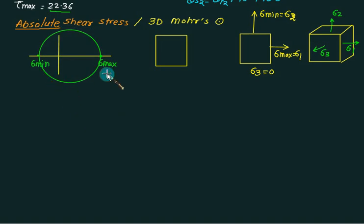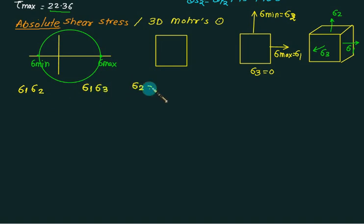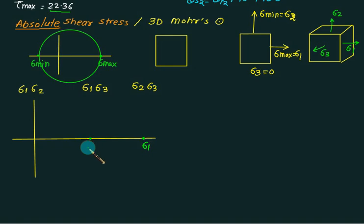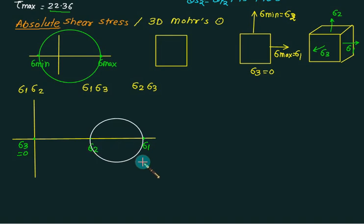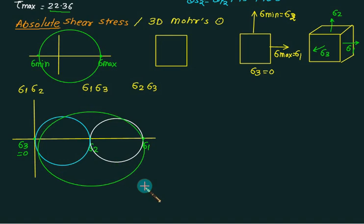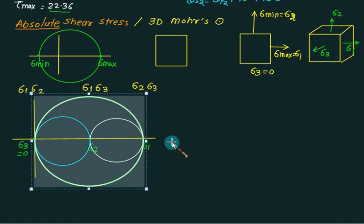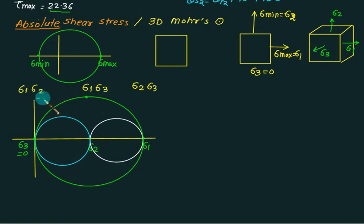Since we have three principal stresses, we can draw three different Mohr circles using three different combinations. The circle with the maximum diameter represents the absolute shear stress. First, draw the circle using sigma one and sigma two, then sigma one and sigma three, and finally sigma two and sigma three. Assuming sigma one and sigma two are both positive and sigma one is greater than sigma two, sigma three equals zero at the origin. The green circle connecting sigma one and sigma three has the maximum possible diameter, and its radius represents tau max absolute.